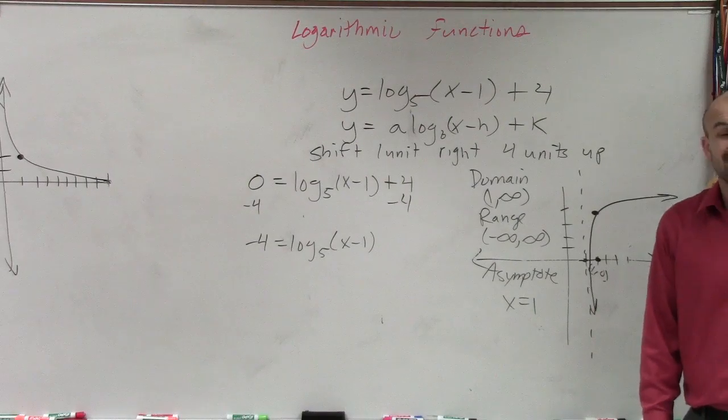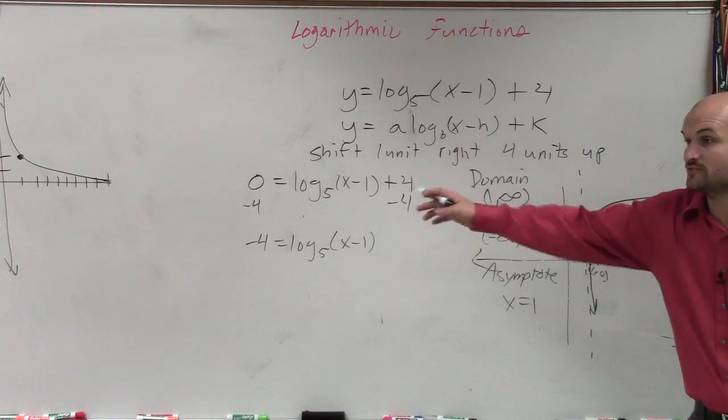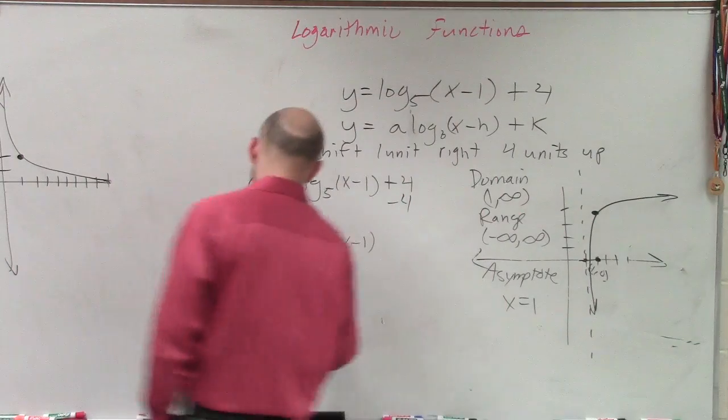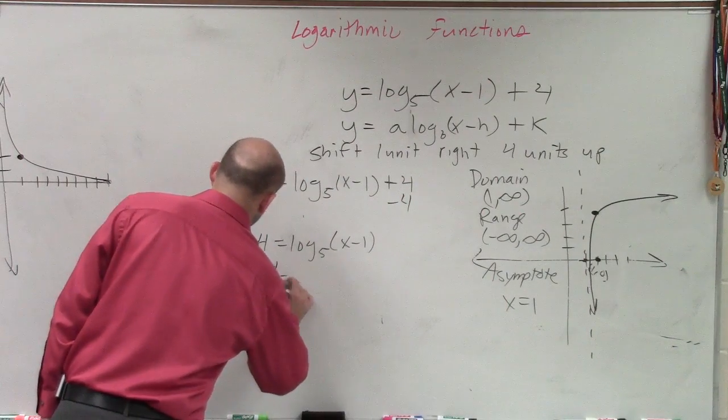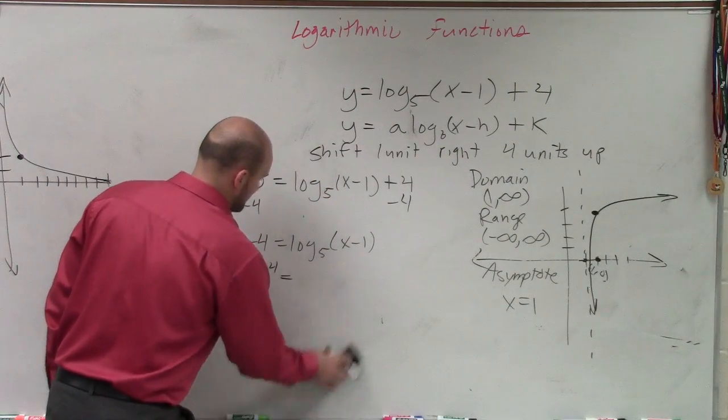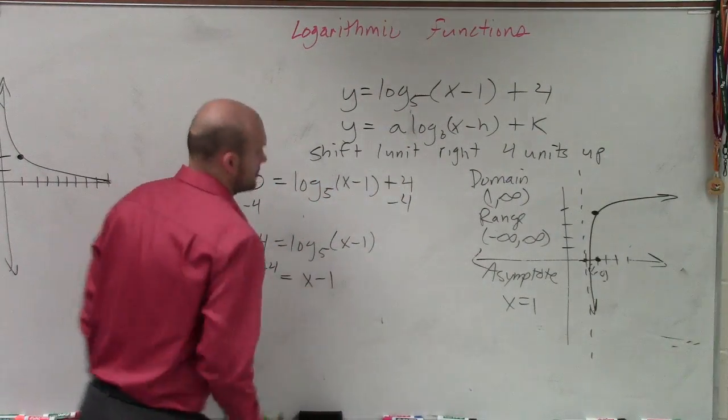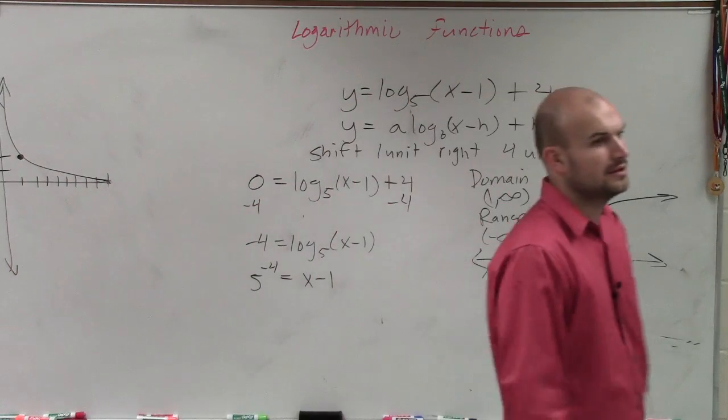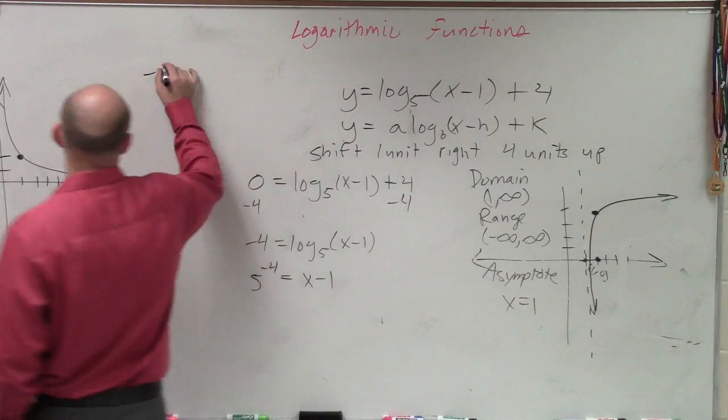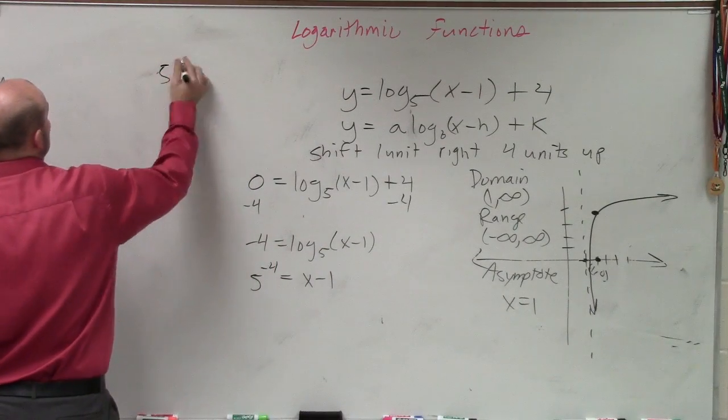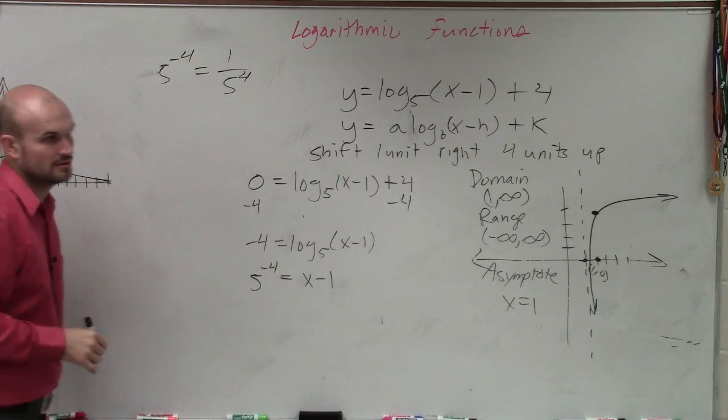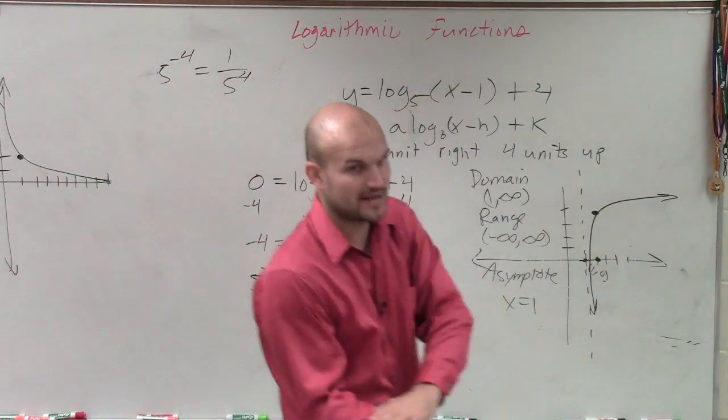Right? Now let's rewrite that in exponential form, right? We've been practicing exponential form. So rewriting this in exponential form is 5 to the negative 4th equals x minus 1. Now, what is 5 to the negative 4th? We talked about this a lot last class period. 5 to the negative 4th is equal to 1 over 5 to the 4th. Yes? Remember negative exponents? Now they go down in the denominator.